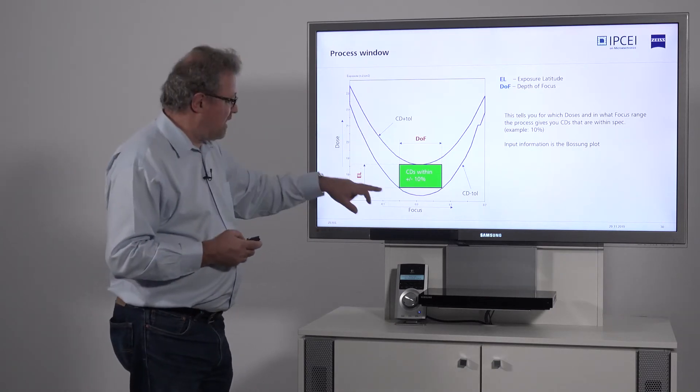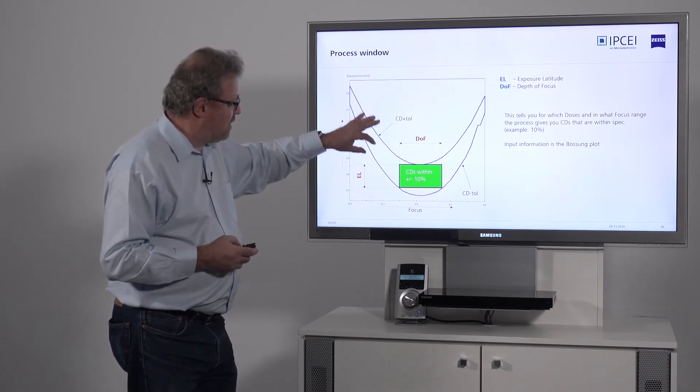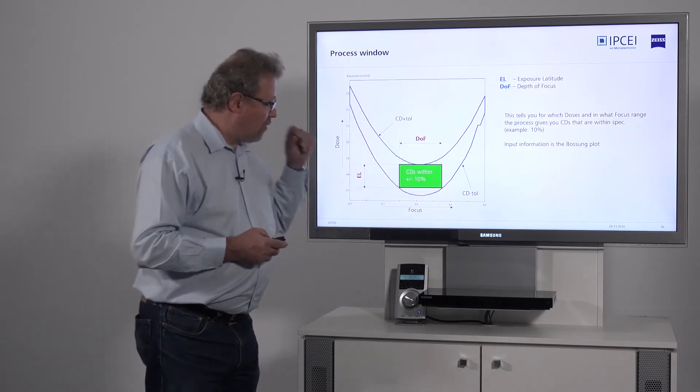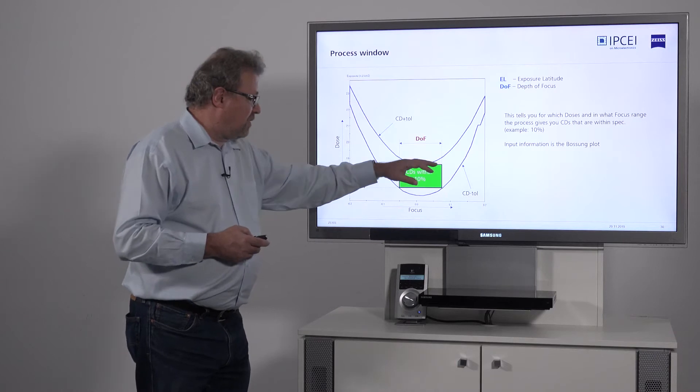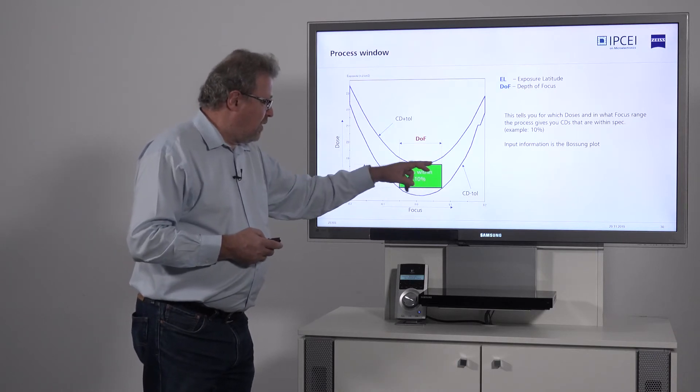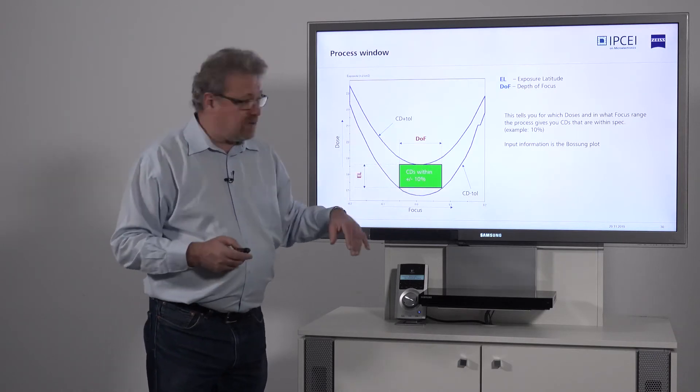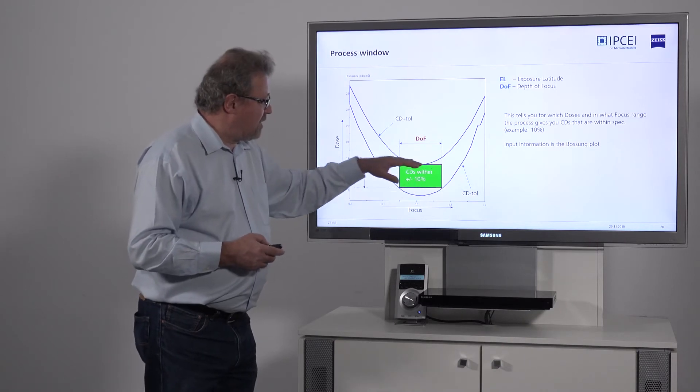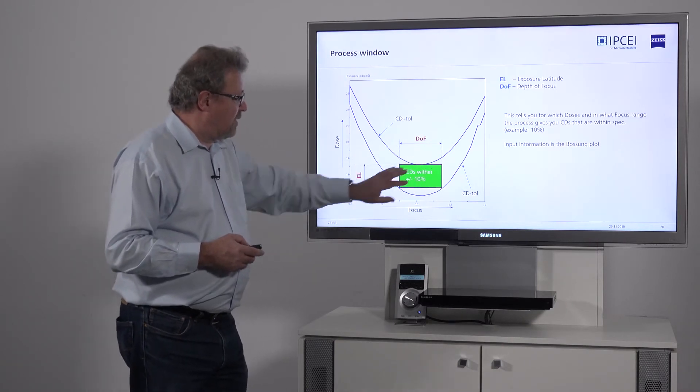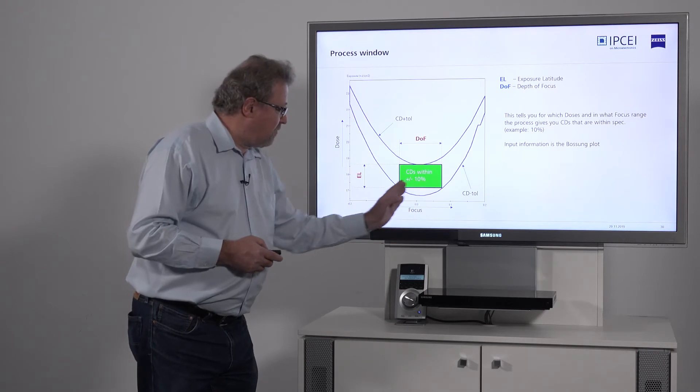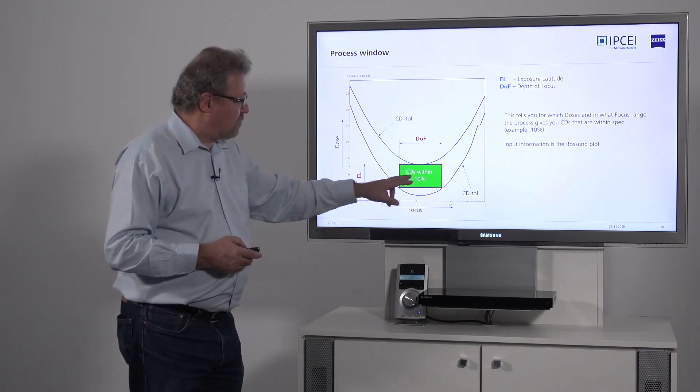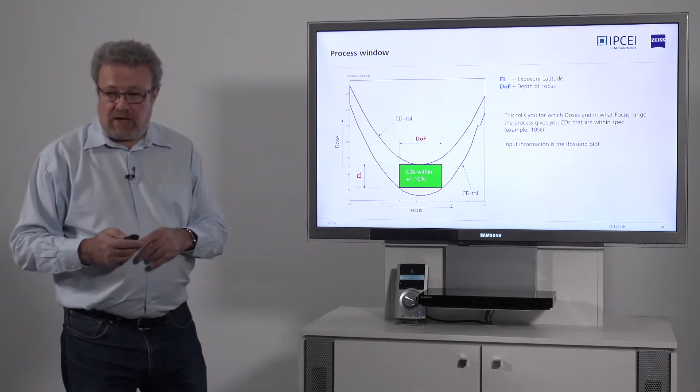So I always need to stay within those two curves. Typically, you draw in a square, for instance. This will be your process window that guarantees that within that focus range and dose range, your CD will remain in specification.